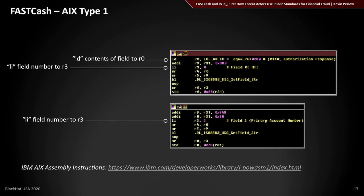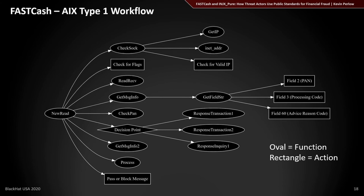Get field string follows a similar pattern — a load for the field to be retrieved, but no data load since it's only reading. Once you know these patterns, you can map out how the malware works. Reading the flow graph left to right and top to bottom: the malware is injected into payment switch software. When a new ISO 8583 message arrives, it intercepts it and calls a new read function, which calls check sock, which calls get IP inet address to verify the message originates from a valid IP.